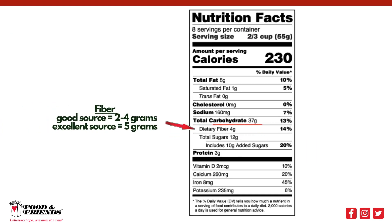Reading the nutrition facts label can help you understand the amount and type of carbohydrates in a food. Total carbohydrate on the label includes all three types of carbohydrates: sugar, starch, and fiber. Below total carbohydrates you will find added sugars, which is helpful to distinguish between naturally occurring sugars and added sugars from processing. Dietary fiber is also included on the food label. Adults need between 25 and 38 grams of fiber per day. A good source of fiber has 2 to 4 grams per serving, and an excellent source has 5 grams or more per serving.